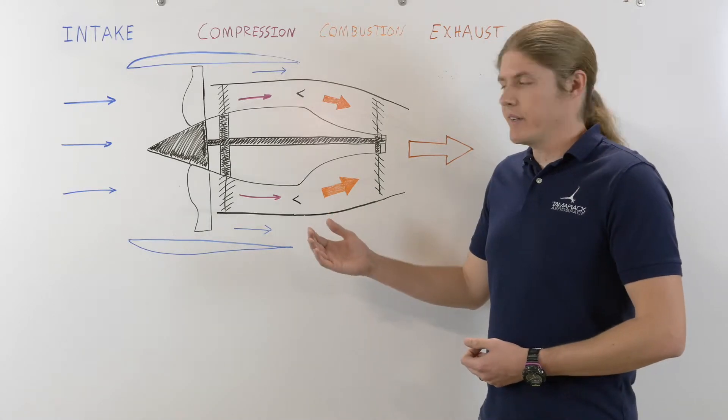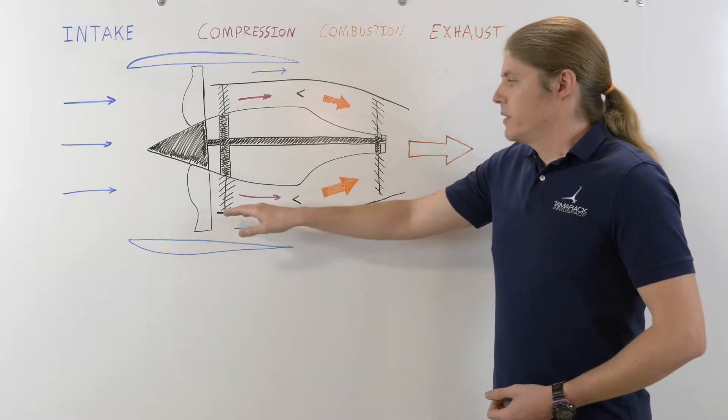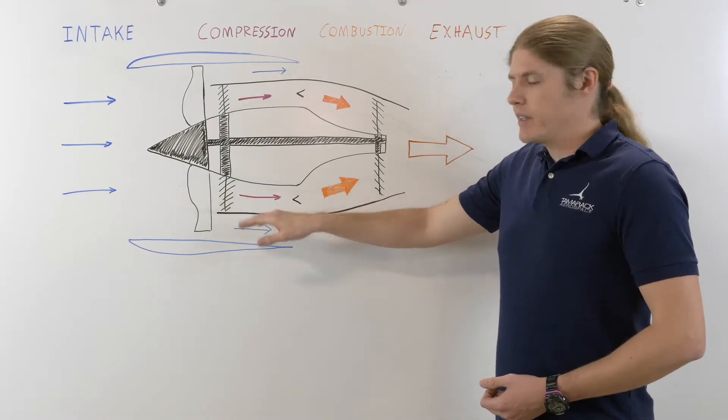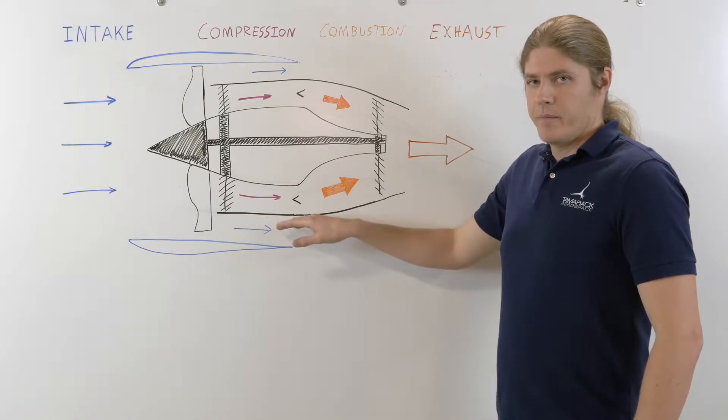Now, when you look in the front of most jet engines, what you're actually looking at is the bypass fan right here. What that does is it splits the flow. Some of it goes into the compression stage, and some of it will actually flow around the jet core of the engine. More on that later.